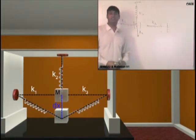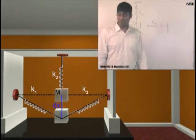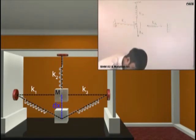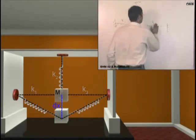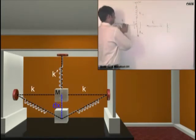Find the - will the motion be a SHM or not? If yes, find the time period. I will make this as k and k, these two are k and k, and this is k dash.